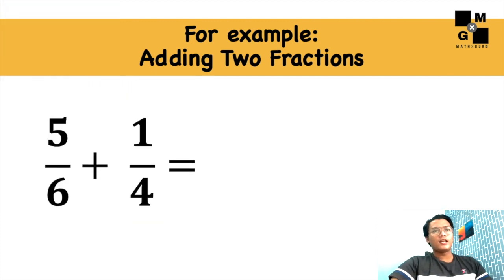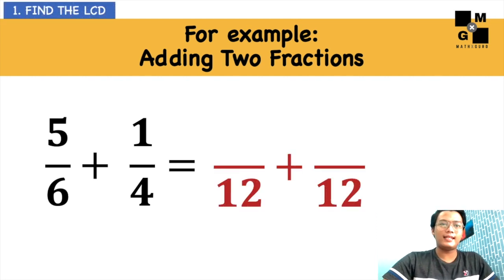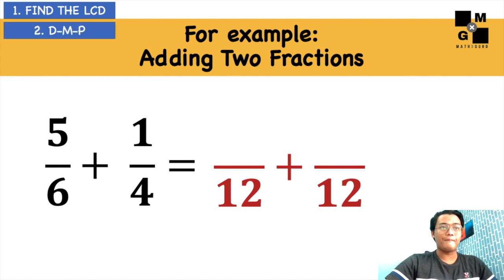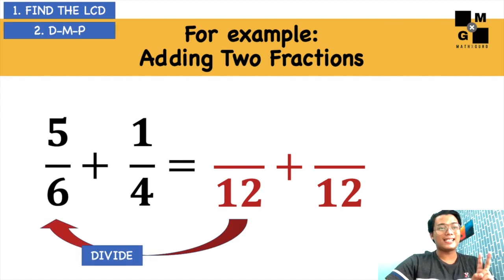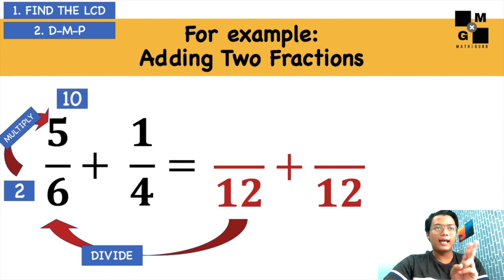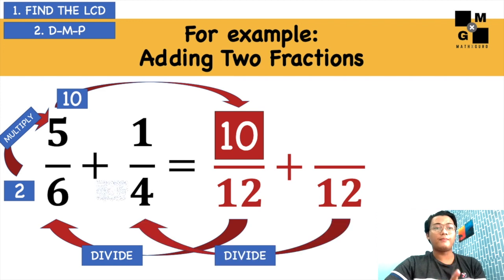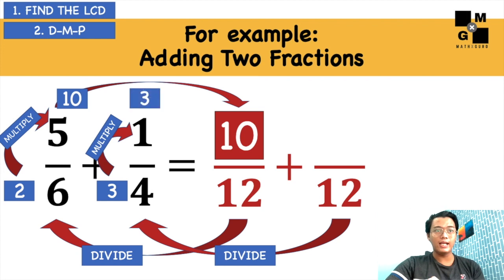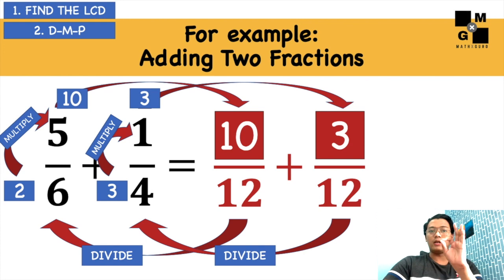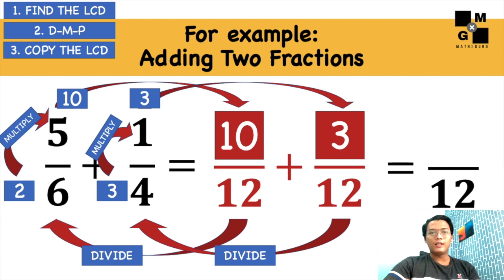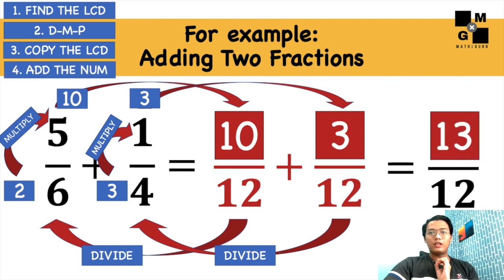Next, what if we have 5 sixths plus 1 fourth? Find the LCD — the LCD is 12. Proceed with the DMP. So 12 divided by 6 is 2; 2 times 5 is 10, and put 10 on the corresponding fraction. Next, 12 divided by 4 is 3, and then 3 multiplied by the numerator 1 will give us 3, and then put 3 on the corresponding fraction. So we now have 10 over 12 and 3 over 12. Copy the LCD and add the numerators, which gives 13.